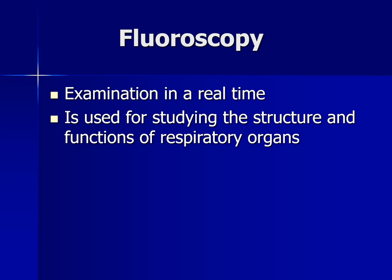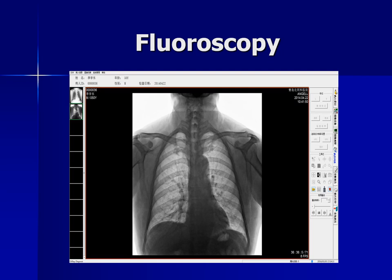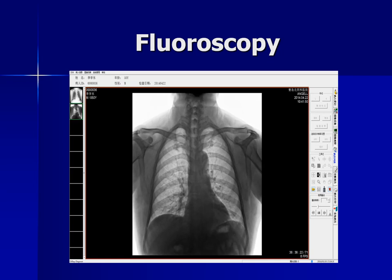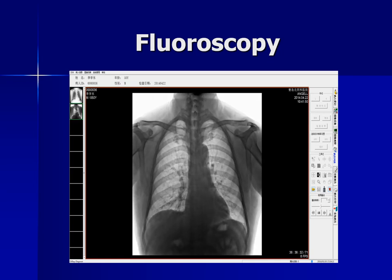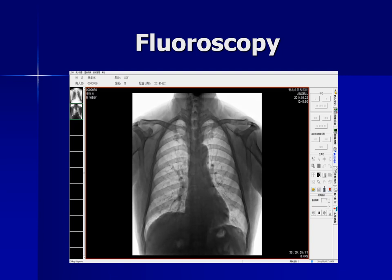Fluoroscopy is one of the techniques of x-ray imaging. It is examination in real time and is used for studying the structure and functions of respiratory organs. On this slide you can see how the hemisphere of the diaphragm moves and how the heart beats. So you can understand that it shows not only the anatomy but also the function of the chest.